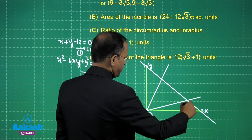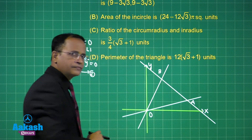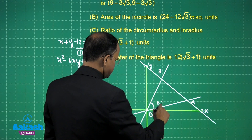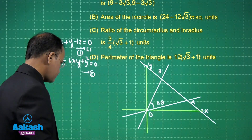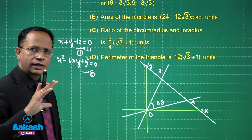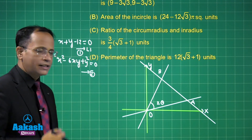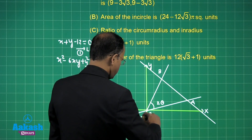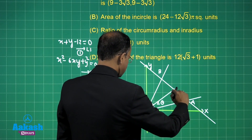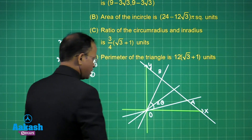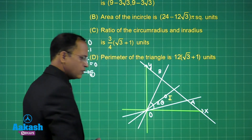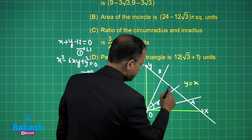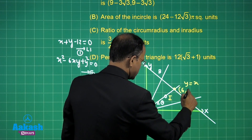We label the vertices A and B, and the angle at the origin as 2θ. To find the incenter, we note that the incenter always lies on the angle bisector, which is the line y = x. Solving the triangle's equation with the line y = x, we get the point (6, 6).